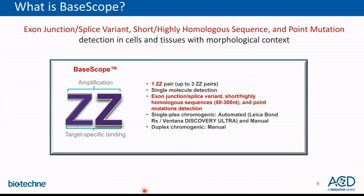So what is BASCOPE? The BASCOPE technology is a powerful tool that specifically supports the detection of exon junctions, splice variants, short sequences, highly homologous sequences, and point mutations. The BASCOPE platform uses probes designed in one to three ZZ probe pairs. The bottom of the Zs are designed to bind to the target-specific regions, while the top of the Zs is designed to bind to the BASCOPE-specific amplification tree. The top and bottom of the Zs are linked by a spacer, and the double-Z probe design allows for single molecule detection.